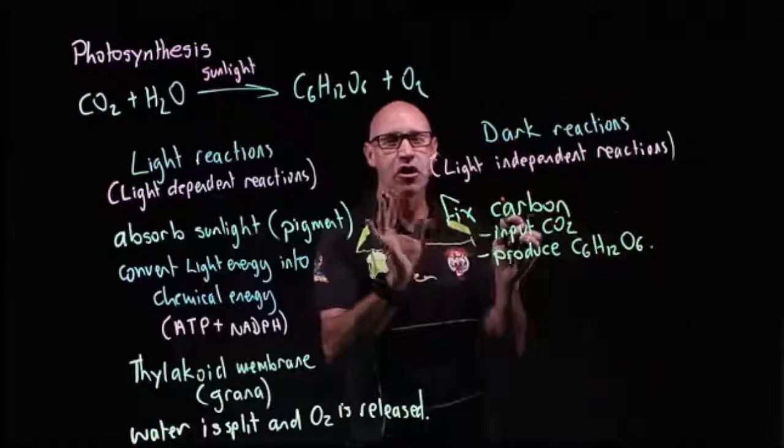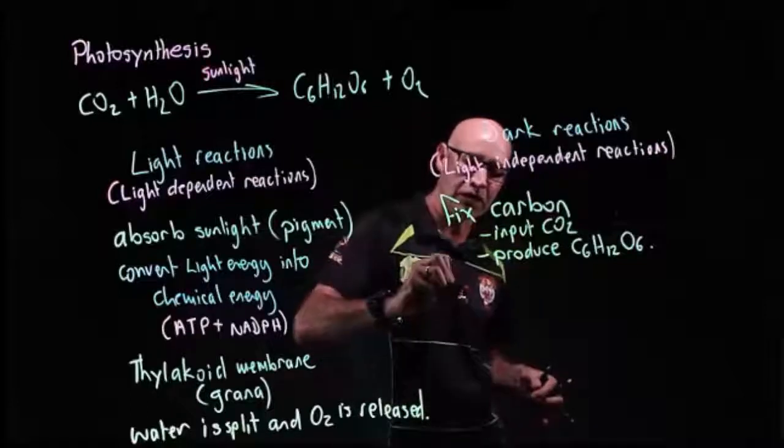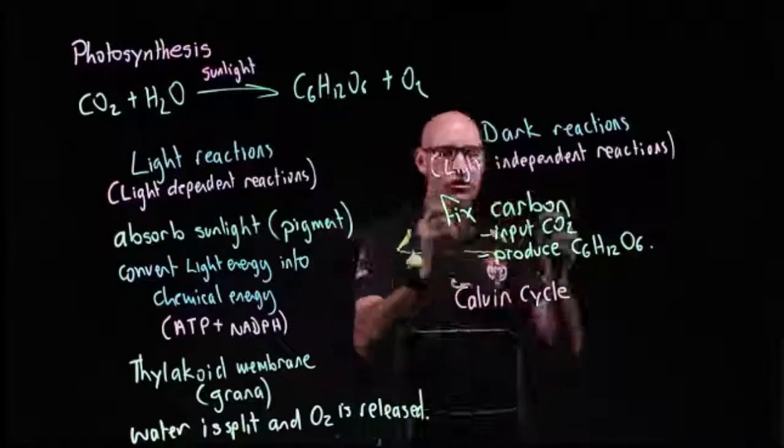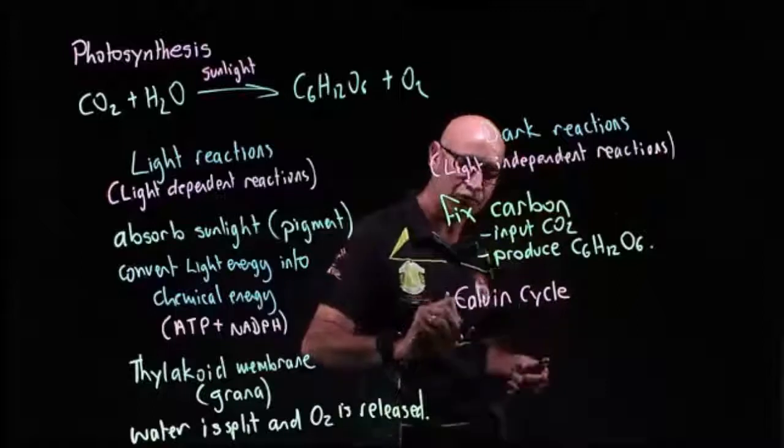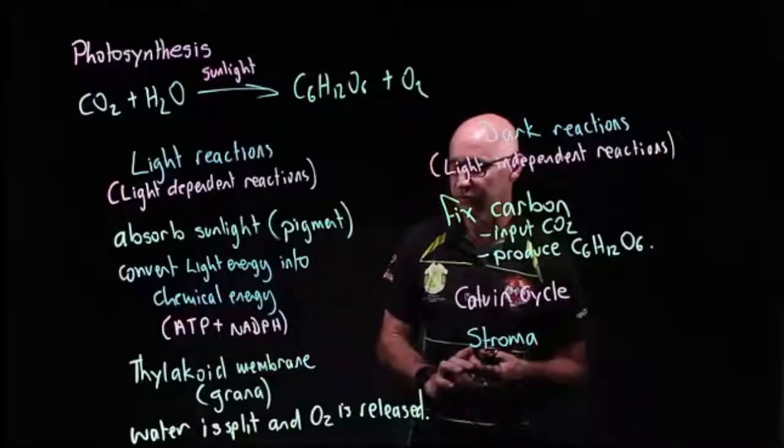It's a very complex process with a number of steps that we call the Calvin cycle. This occurs in the stroma or the liquid of the chloroplast.